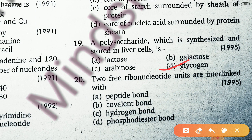The 20th question: two free ribonucleotide units are interlinked by — peptide bond or phosphodiester bond? The right answer is phosphodiester bond, not peptide bond. The phosphodiester bond connects the phosphate group to a hydroxyl group on the sugar of the adjacent nucleotide.